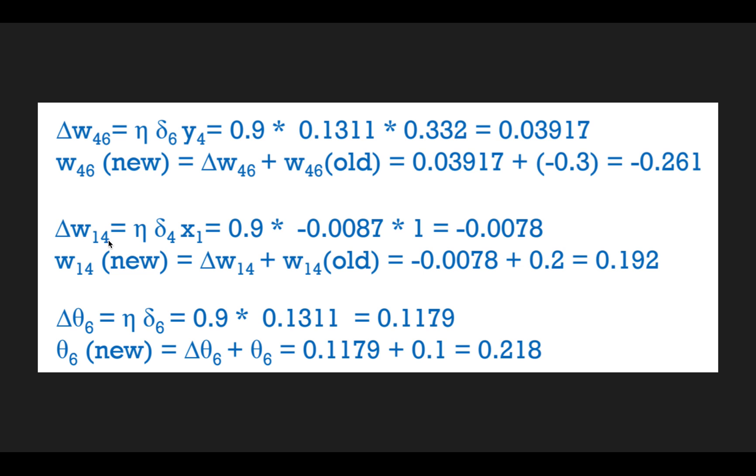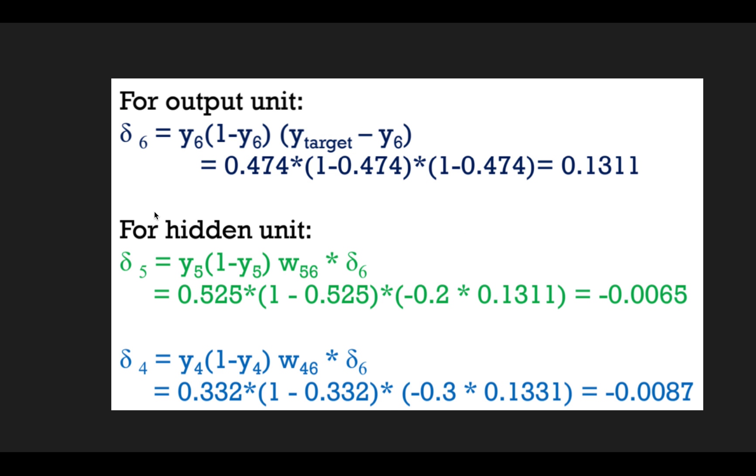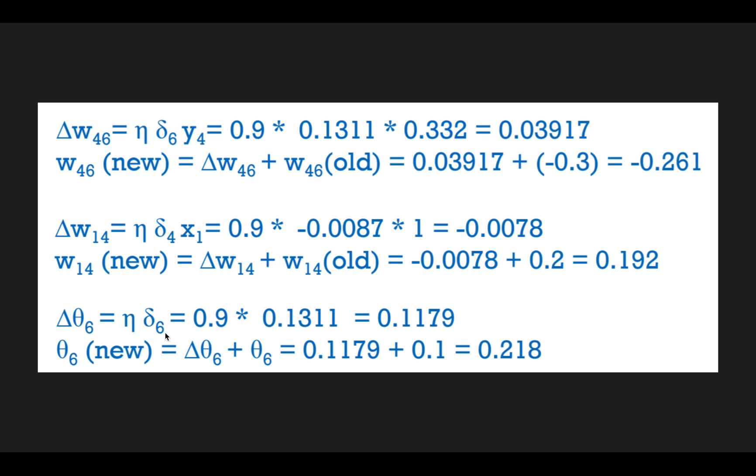Similarly we can do for 1 to 4 and every other node in the network. Then after, we can update the theta, the biases, for which we have the output as 1 only. So we consider it as 1, so we will ignore that term. The formula would be the learning rate times the delta_6 if it is for the 6th node. So we will update the biases and our weights.